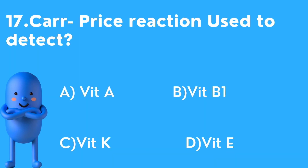Seventeenth question: Carr price reaction is used to detect — options are A) Vitamin A, B) Vitamin B1, C) Vitamin K, D) Vitamin E. The correct answer is Vitamin A — the Carr Price reaction gives a blue color in the presence of Vitamin A.